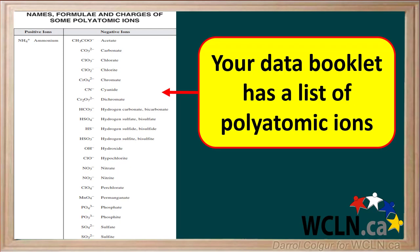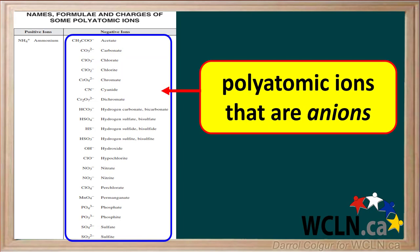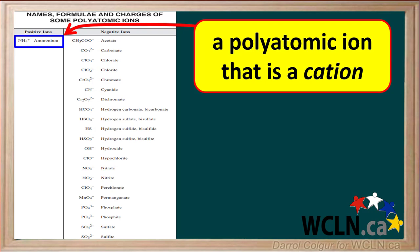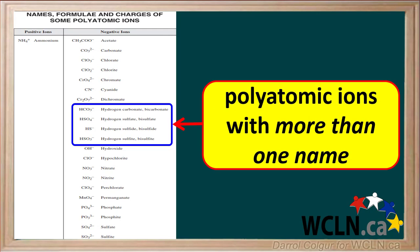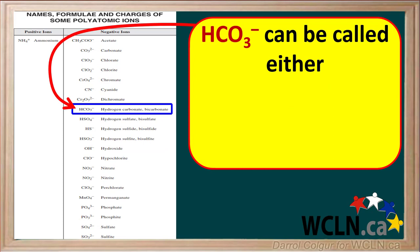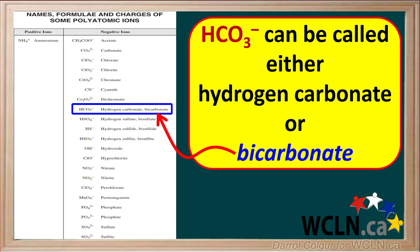Your data booklet gives you a list of polyatomic ions we can use to form compounds. Here is carbonate with the formula CO₃²⁻, but you can see there are many others. Most of the ions in this table are negative ions, or anions. But there is one polyatomic ion that has a positive charge, so it is a cation — ammonium with the formula NH₄⁺. Notice there are a few polyatomic ions that have more than one possible name. For example, HCO₃⁻ can be called either hydrogen carbonate or bicarbonate.